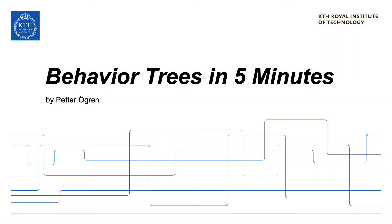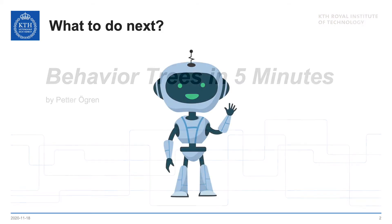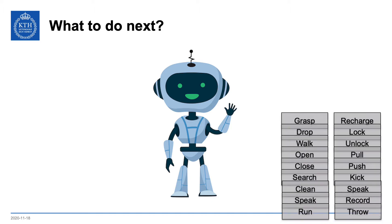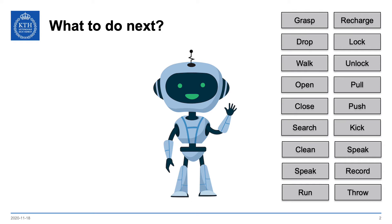Hello guys. In this video I'm going to explain behavior trees in 5 minutes. The key problem solved by behavior trees is what to do next. Imagine you have a robot or an agent in a computer game and you have a bunch of actions and you need to choose from those — what to do next?